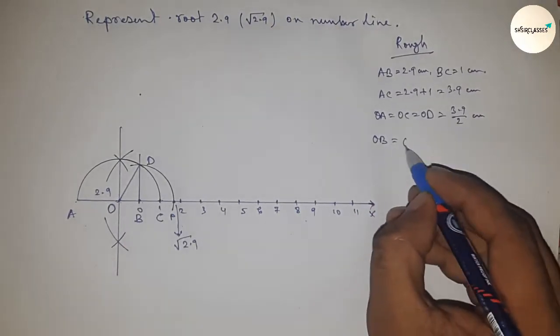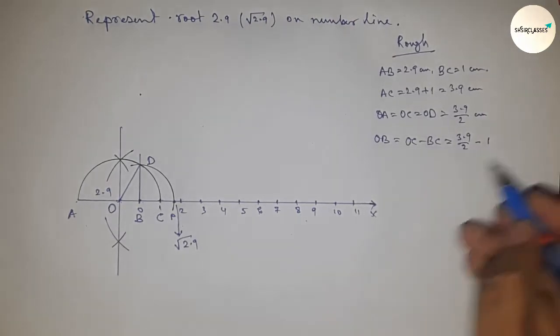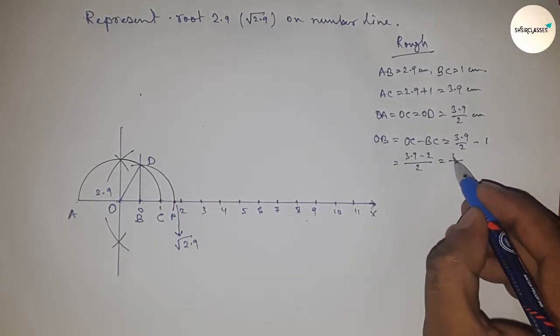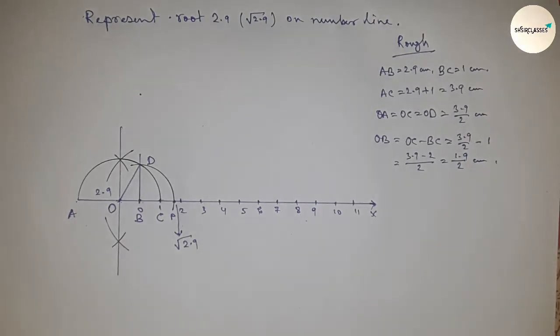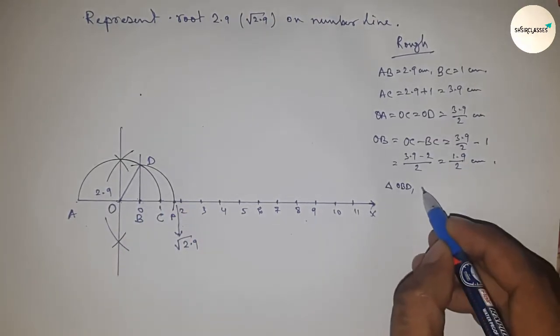Next, OB equals OC minus BC. Putting the values of OC and BC, after calculation we get 1.9 by 2 centimeters. Now in right angle triangle OBD, from right angle triangle OBD...